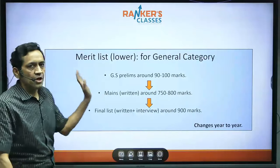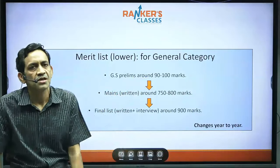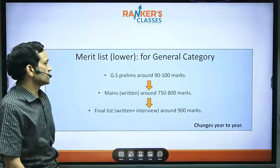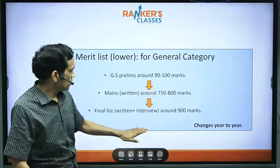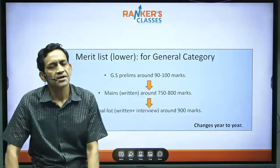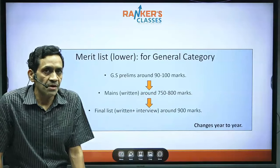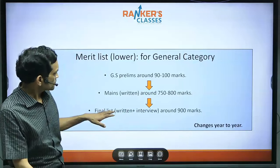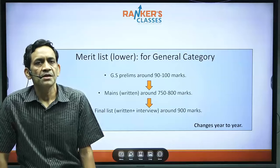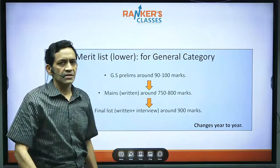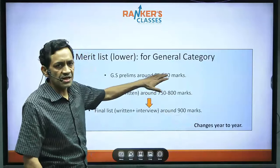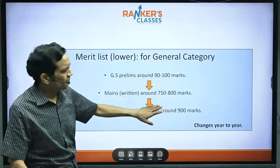The overall merit list: at the prelims level it is around 90–100 marks. After that you are called for interview. The written examination merit minimum is around 900 marks, and the highest marks go up to around 1100 marks.